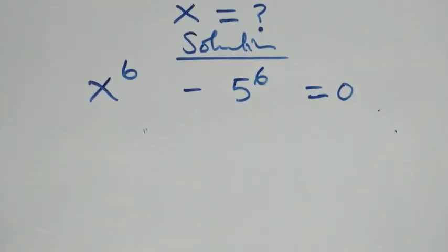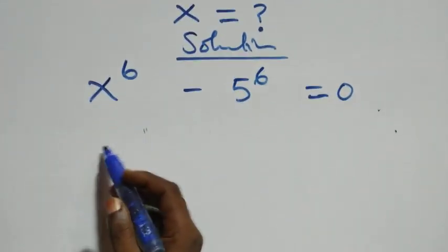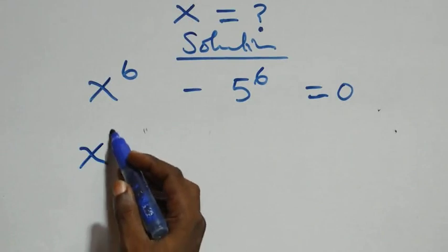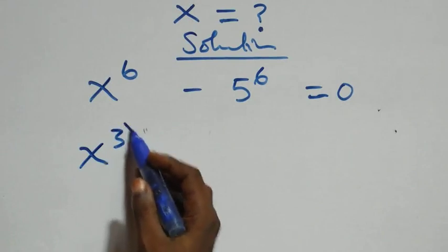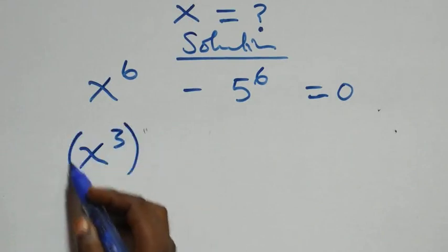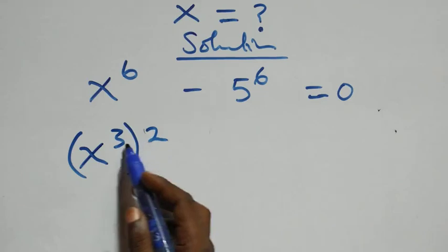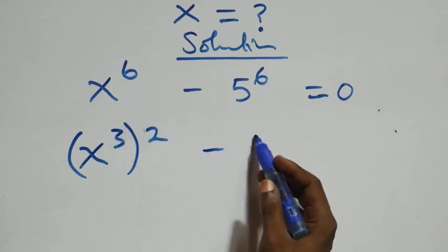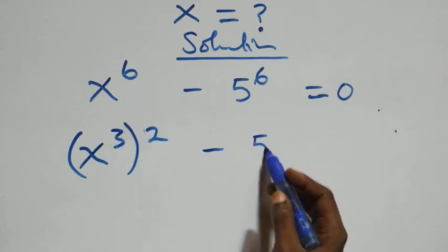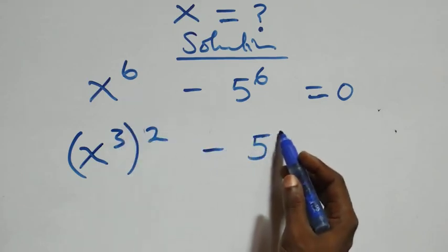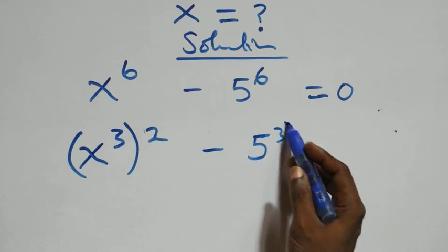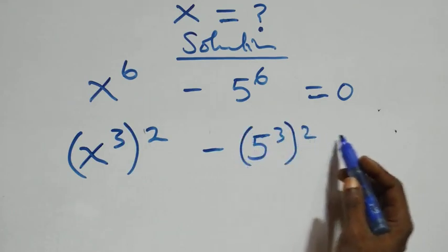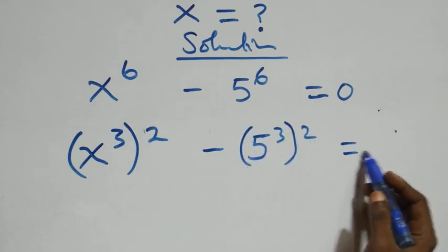At this next step, we can write this as x raised to power 3 then raised to power 2 — since 2 times 3 gives us 6 — then minus 5 raised to power 3, then raised to power 2, equals to 0.